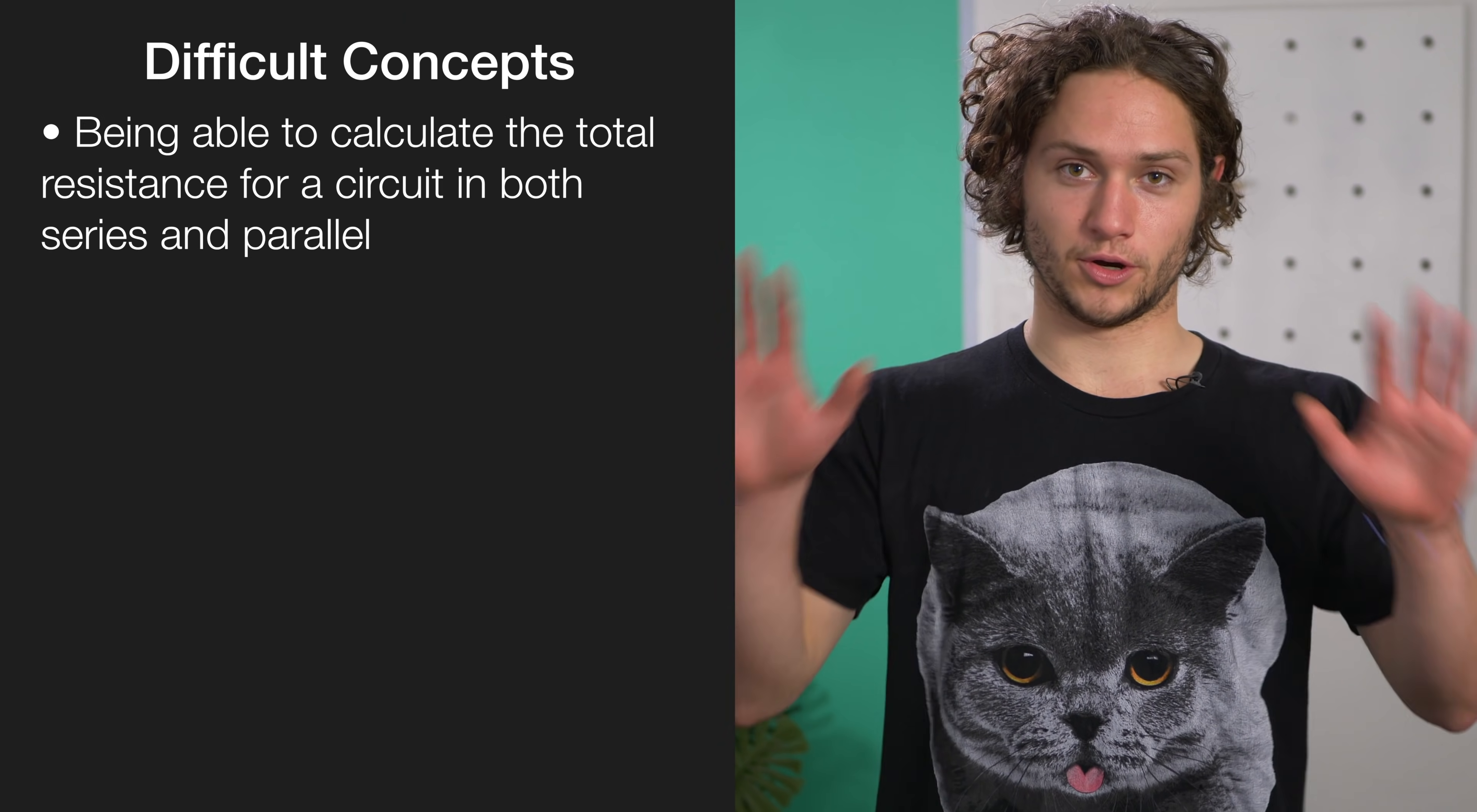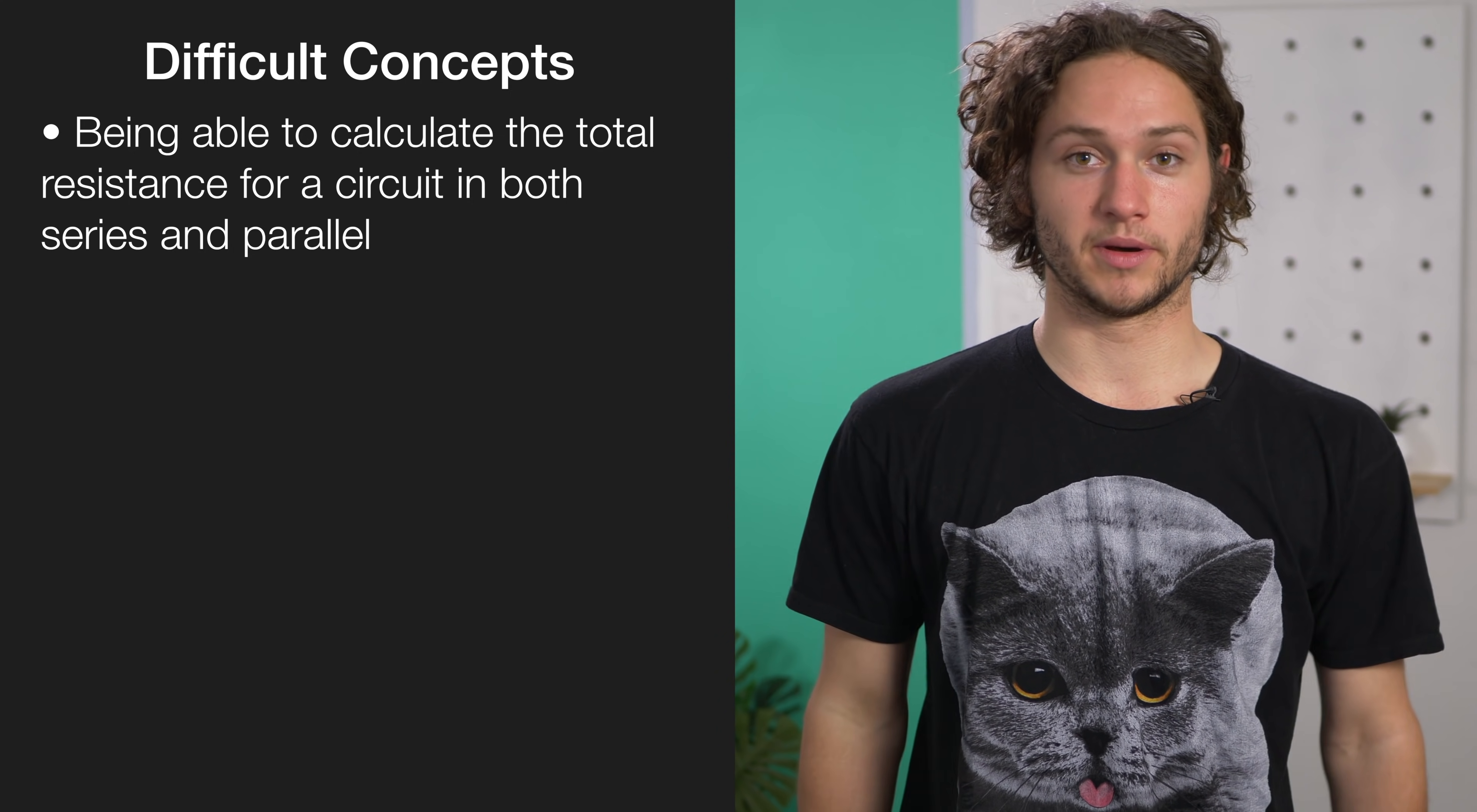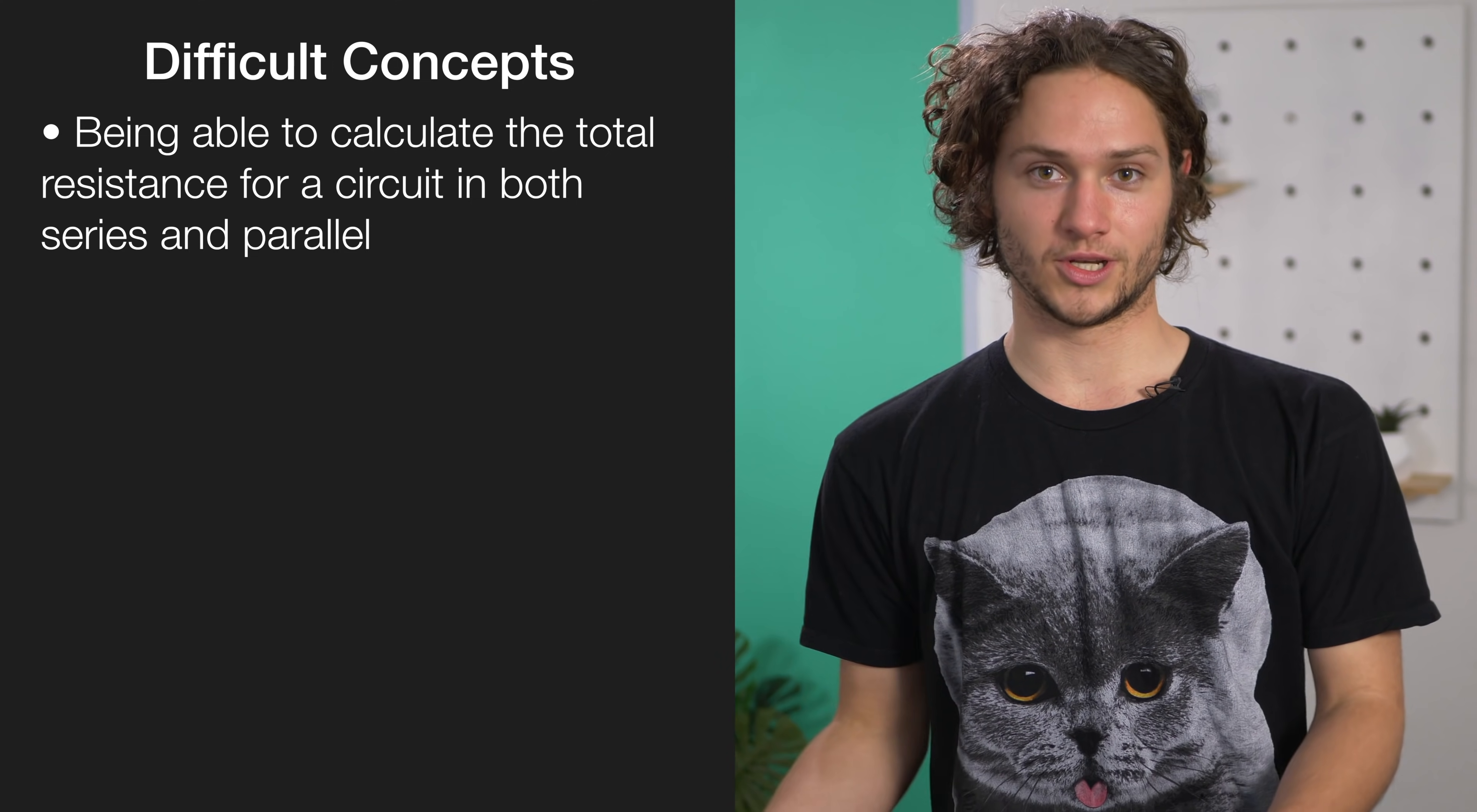We'll now run over some important but often really difficult concepts. First is being able to calculate the total resistance of a circuit, both in series and parallel. The way that I like to remember which formula to use is that in series you're just adding up each of the resistances, but in parallel you've got a resistance over a resistance. So you have to use the formula that has 1 over RT equals 1 over R1 plus 1 over R2, and so on.